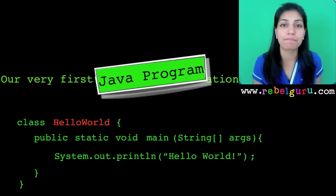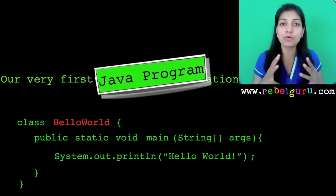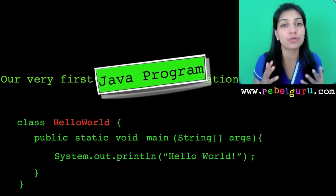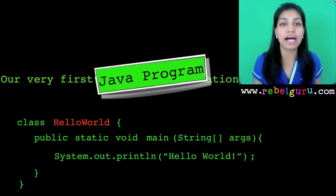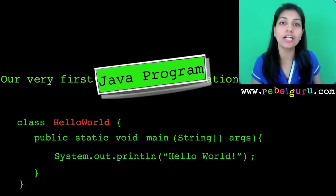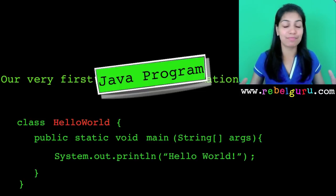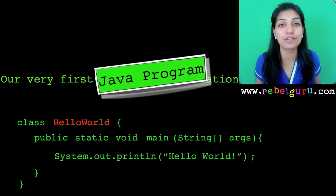Now, how do you actually save this program? Every Java program has the extension '.java', so all your Java files will be something dot java. But what will that 'something' be? You cannot save this file with just any name — the name of the file has to be the same as the class in which the main method resides. In this case, the main is part of a class called HelloWorld, which is why the filename must be HelloWorld.java.